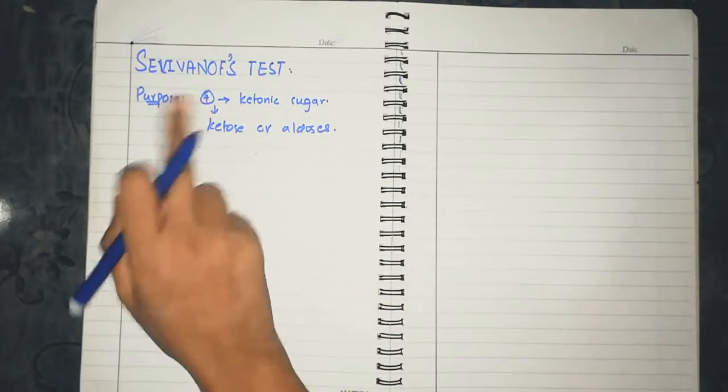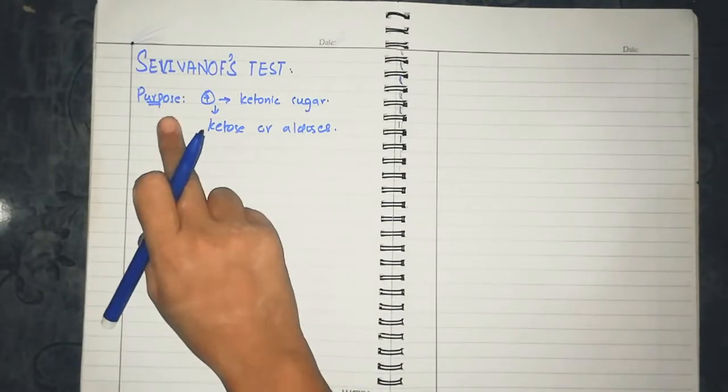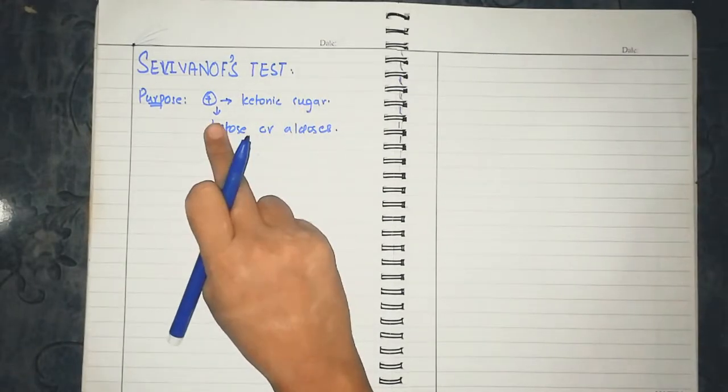Assalamualaikum students. Today we have to look at the Selivanov's test. First of all, this test gives us positive results for ketonic sugar.